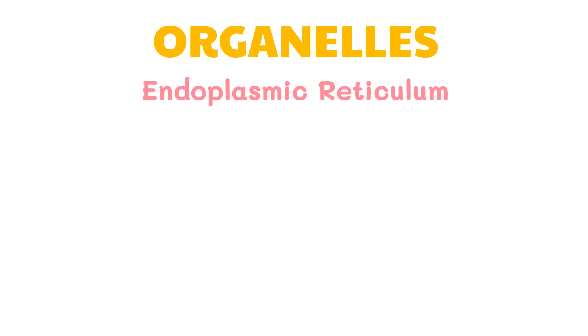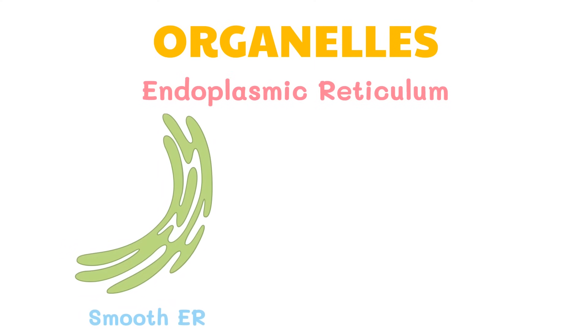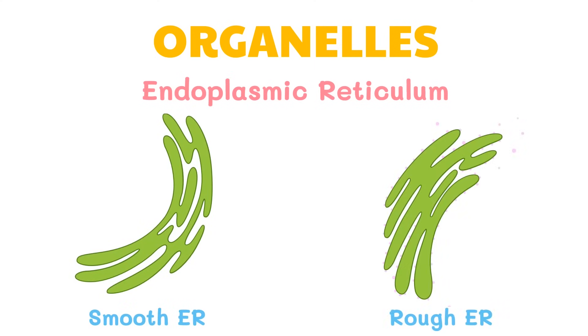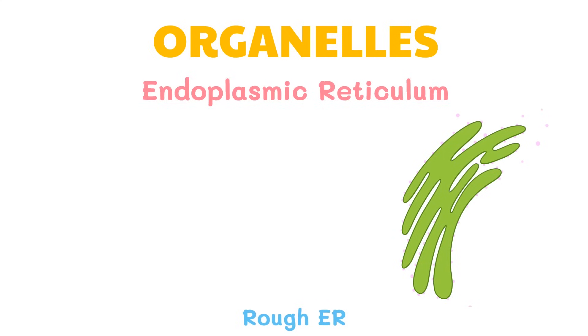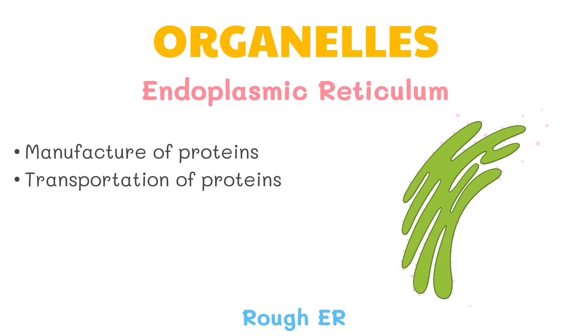Another organelle is the endoplasmic reticulum, or ER. There are two types: the smooth ER and the rough ER. The smooth ER is named so because it lacks ribosomes on its surface; the rough ER is the opposite. Since the rough ER has ribosomes, it is involved in the manufacture of proteins in the cell, and also helps in the transportation of proteins.